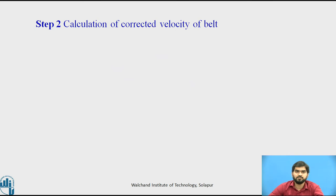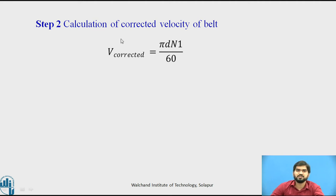Step number 2: calculation of corrected velocity of the belt. Here we calculate v_corrected = π d n1 / 60. We had already made an assumption that v = 18 m/s. Since we are selecting the diameter from the standard data book, the velocity will definitely change, which is why we need to calculate the corrected velocity.